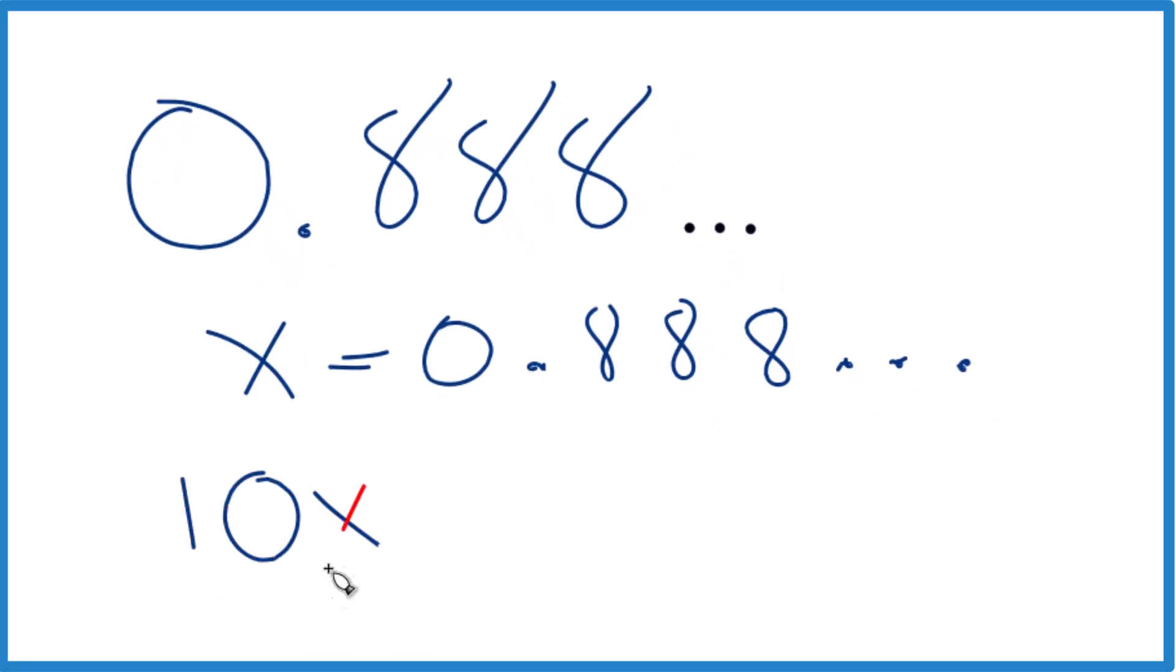So 10 times x, that's 10x, and then 10 times this is 8.888, and the eights just keep going. That's a little bit better. Now we have this whole number.